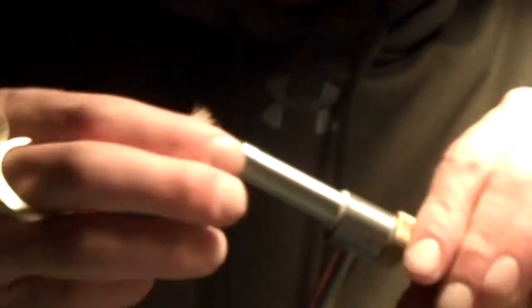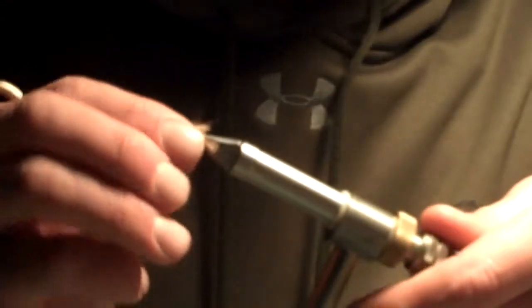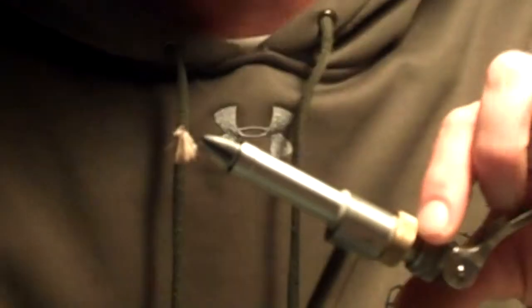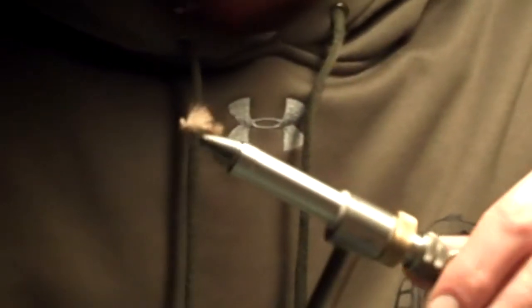Size 16 tan X caddis. Great fly for emerging caddis on the Madison River, the Missouri, the Yellowstone, and pretty much wherever caddis hatch.